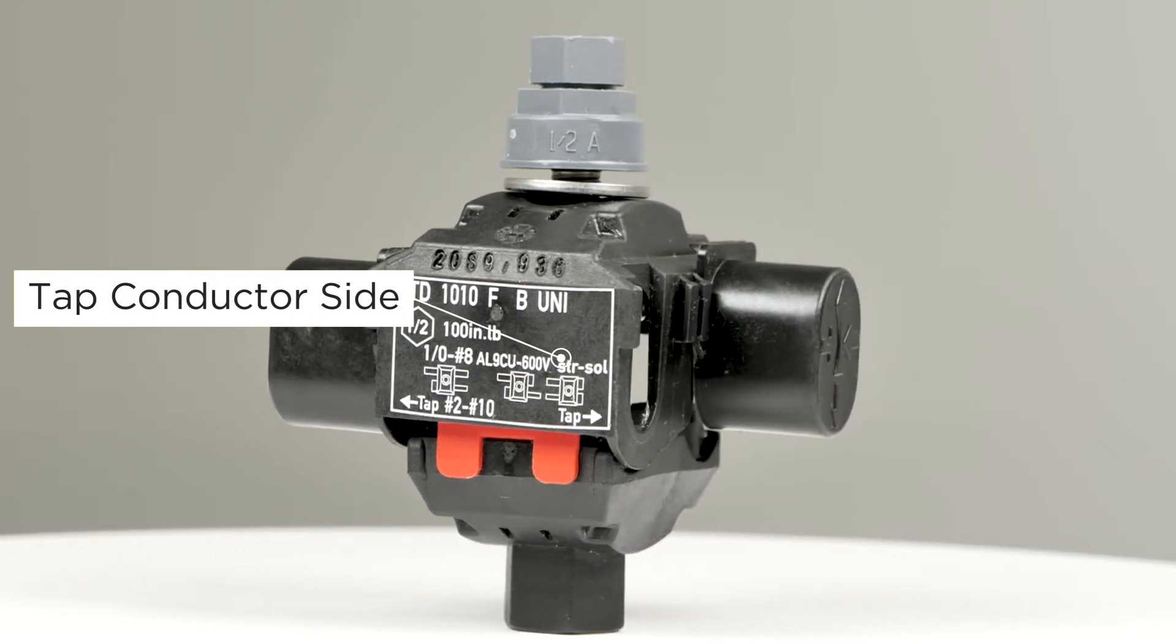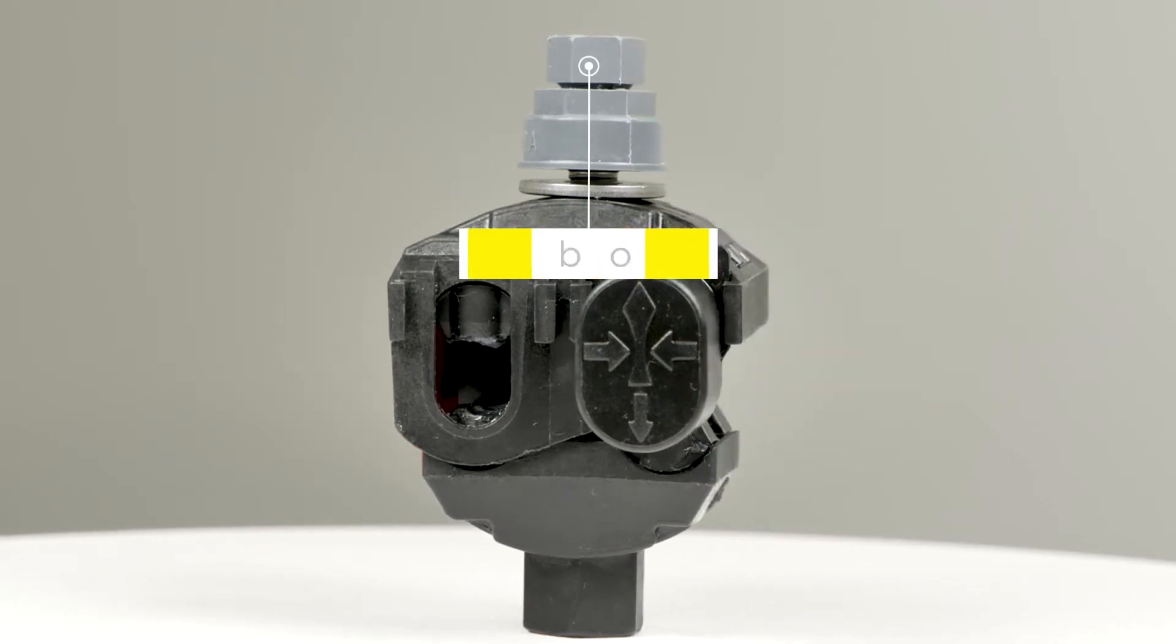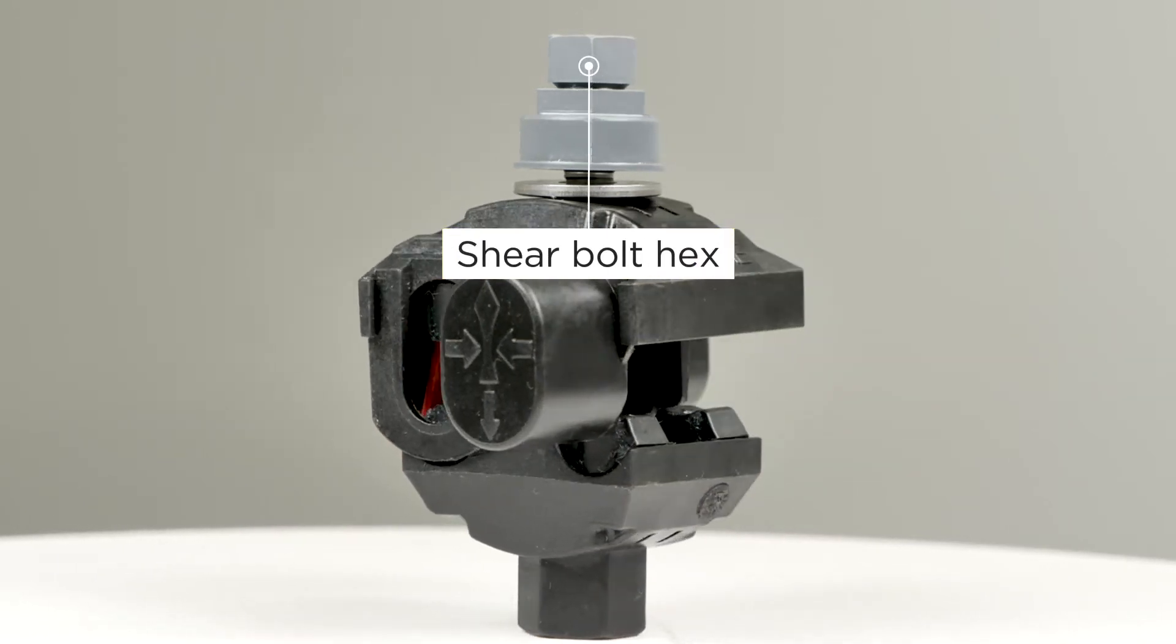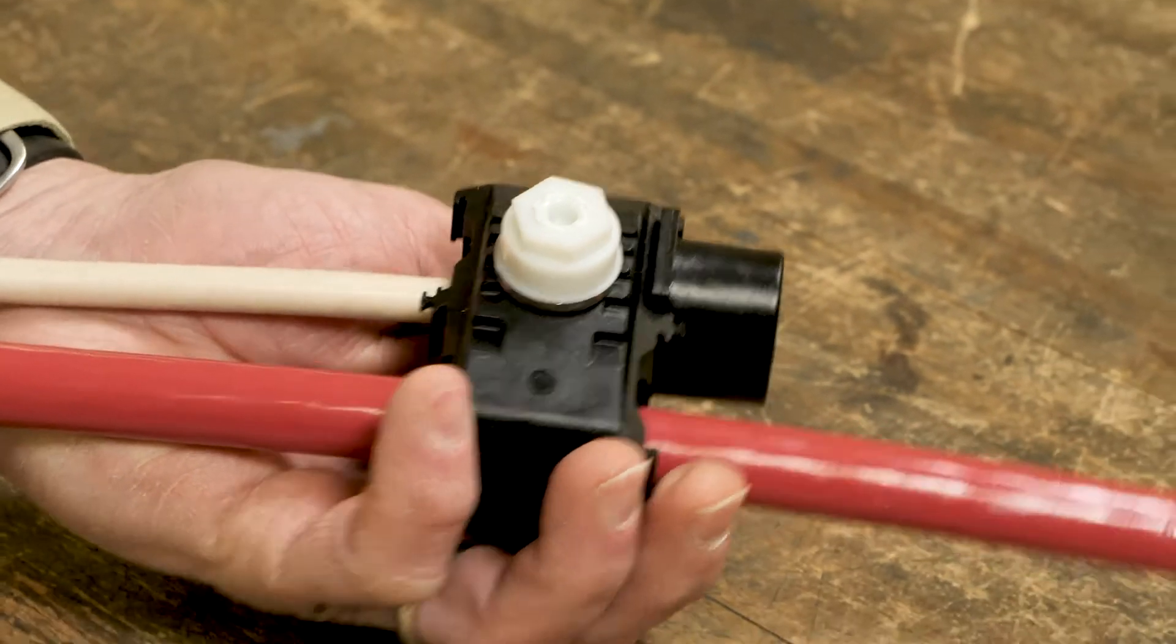The top of the connector contains a shear bolt for easy installation. The uppermost hex is used to tighten the connector during installation. The wrench or socket size required for installation is inscribed in the base of the bolt.